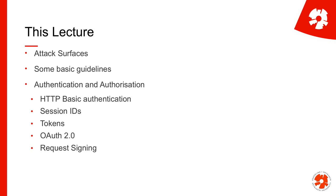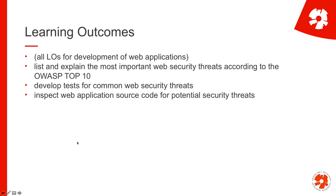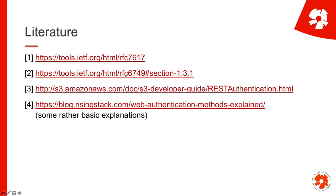There are a couple of learning outcomes related to this, connected to development of web applications — for example, being able to spot errors in an application or improve it, which also relates to security like introducing authorization. There are also learning outcomes specifically for web security threats, mainly for the coming lecture, but it's a good start to talk about authentication here. There are some basic explanations on attack surfaces, a developer guide for authentication methods, and a blog post with basic explanations on different ways to do authentication — an interesting read if you practically want to do that in a project.